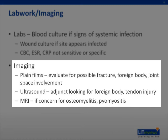Plain films are often obtained at the location of injury to evaluate for underlying fractures resulting from trauma and to allow radio-opaque foreign bodies to be seen. Contrast material can also evaluate for joint space infiltration. Ultrasound can be a useful bedside adjunct for foreign body remnants or tendon injury in the hands of a skilled operator. MRI is rarely used but would allow for more thorough evaluation of potential osteomyelitis or pyomyositis.